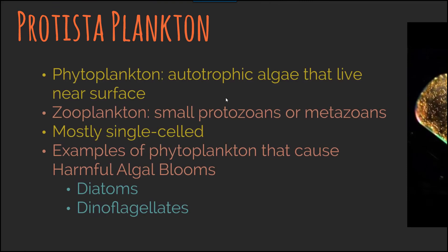Protista is a type of phytoplankton that is autotrophic — they are a type of algae that live near the surface. They can also exist in a zooplankton form as small protozoans or metazoans. Most of these are single-celled, and examples of organisms that cause harmful algal blooms include diatoms and dinoflagellates. Protista, while they may look similar to eukaryotic organisms, are part of the domain Protista, so quite different.